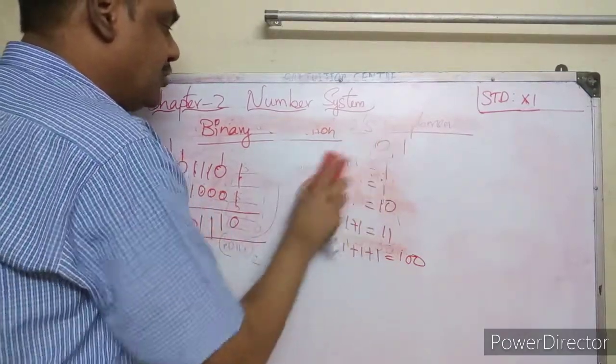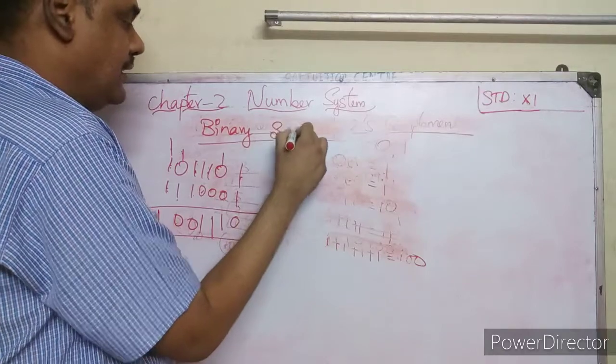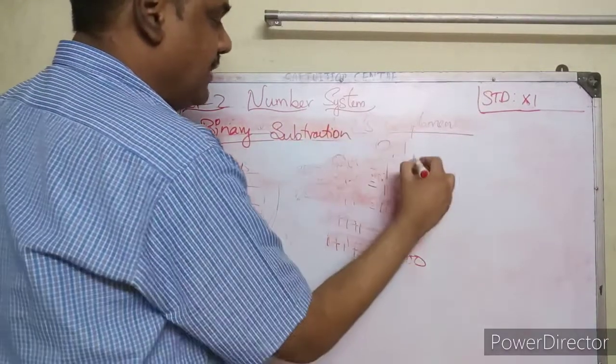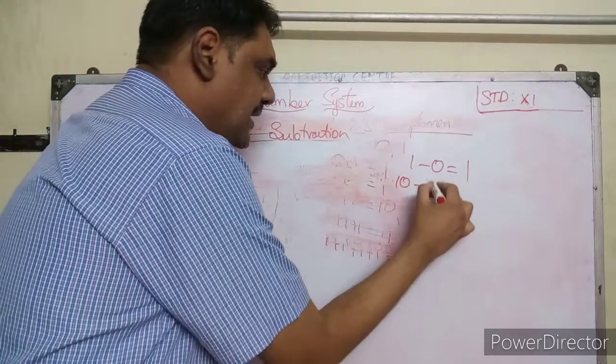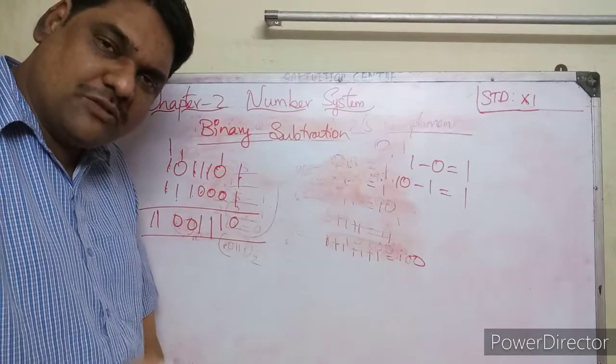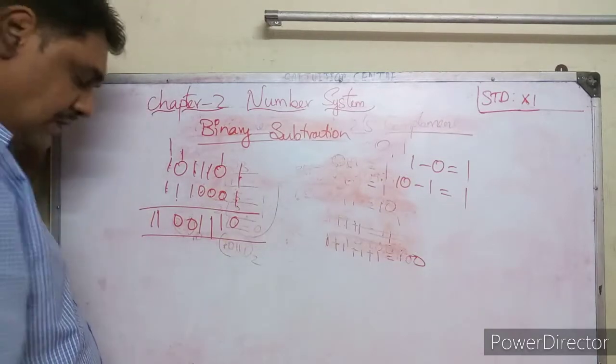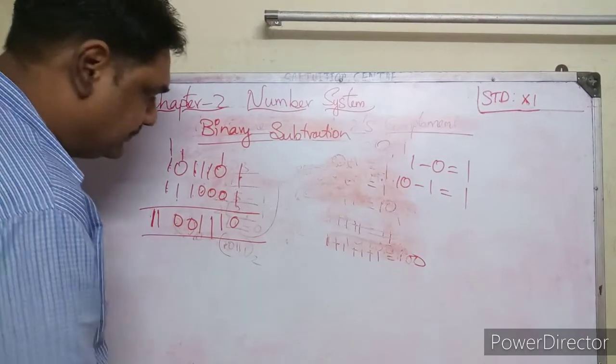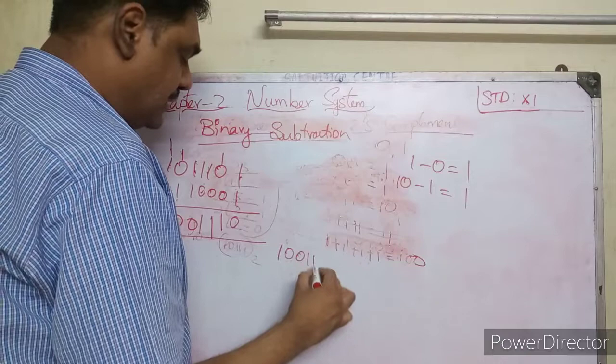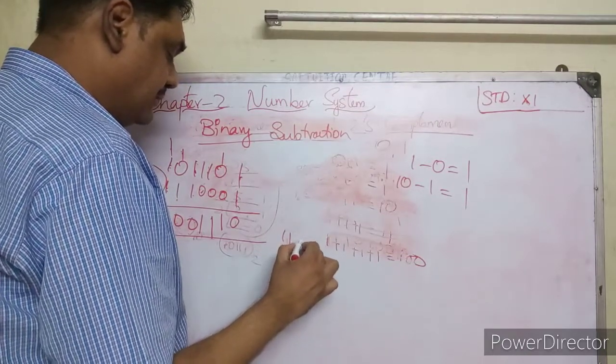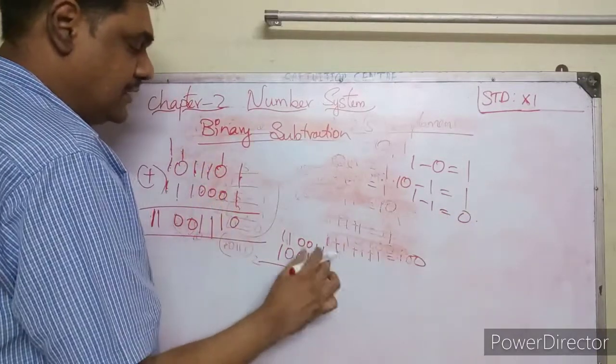Now let's see binary subtraction. One minus one is zero, one minus zero is one, zero minus zero is zero.